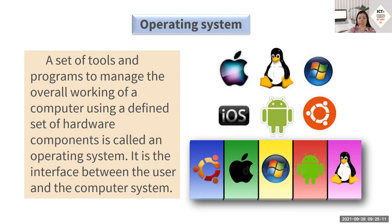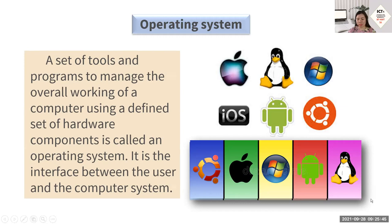Before we can use application software, we must first have an operating system because it's the operating system that allows other applications to be used through our hardware device. Examples are Mac OS, Linux, Windows, and Android.